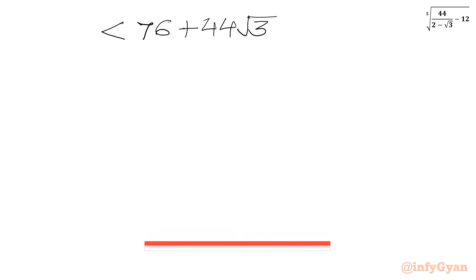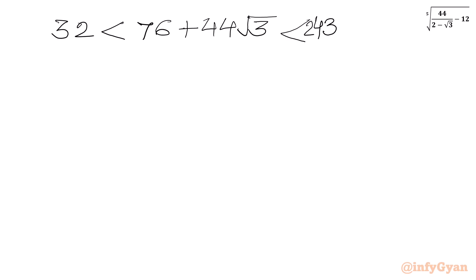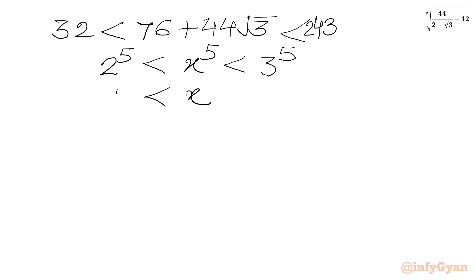Now, 76 plus 44√3 is less than 243 and greater than 32. Since 32 is 2⁵ and 243 is 3⁵, we can see that x is lying in the interval between 2 and 3. So x is greater than 2 but less than 3.